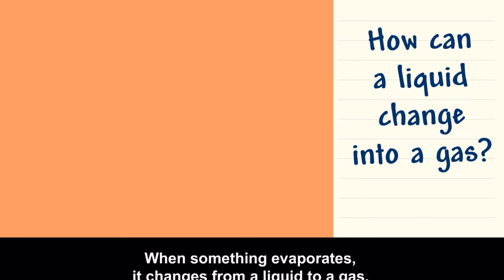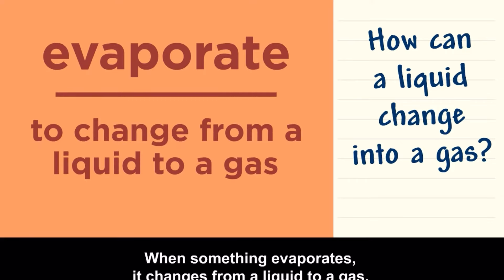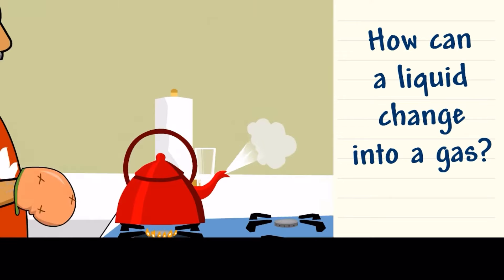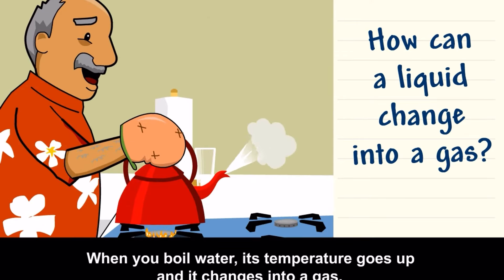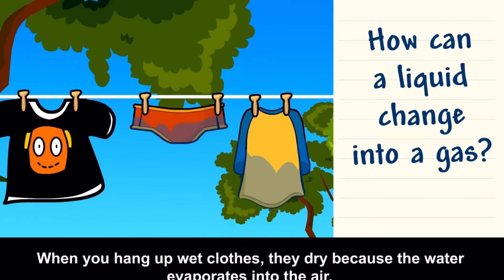When something evaporates, it changes from a liquid to a gas. When you boil water, its temperature goes up and changes into a gas. When you hang up wet clothes, they dry because the water evaporates into the air.